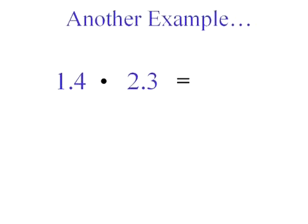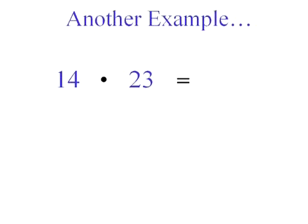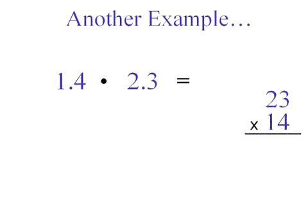Once again, we're going to multiply the numbers as if there were no decimal places. Let's erase them. Multiply normally. Remember how to do that? Let's see. Four times three is twelve. Two, carry the one. Four times two is eight, plus the one is going to be nine.